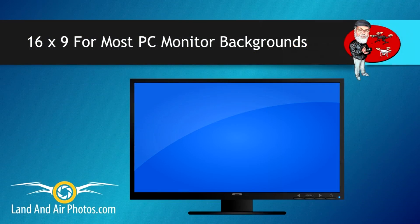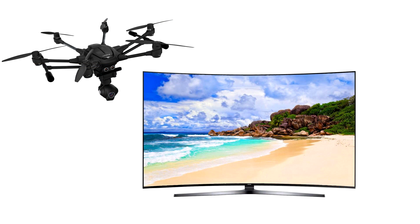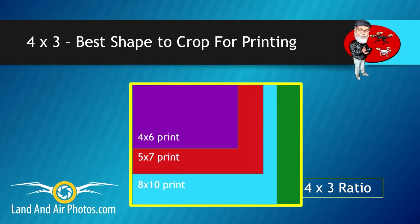If you want to use your pictures as wallpaper on your desktop, stick with video on the toggle and choose the resolution closest to your desktop's display setting — this will probably be 1920x1080 unless you have a really large monitor. If you want to print your photos, go with the photo toggle setting to get the most pixels for cropping to fit whatever size picture you're trying to print.